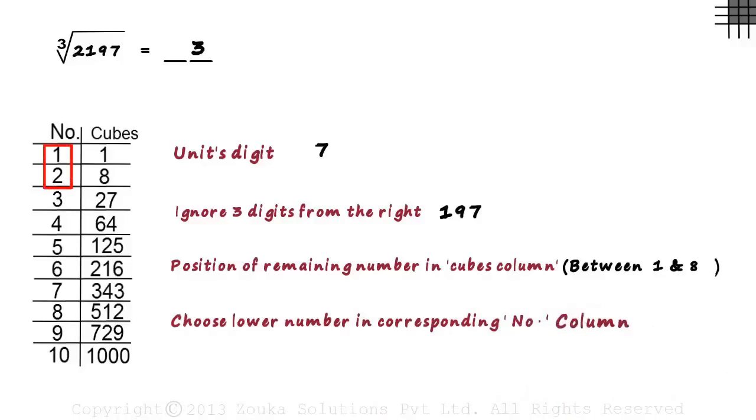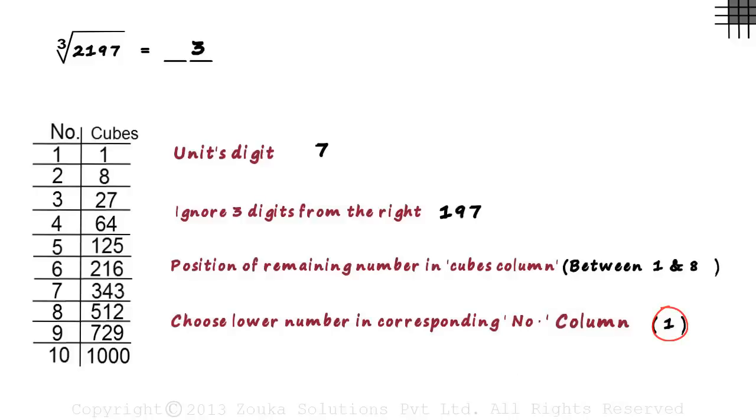The lower of 1 and 2 is 1. That's it. This is your tens digit. So cube root of 2197 is 13.